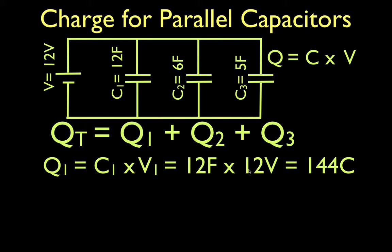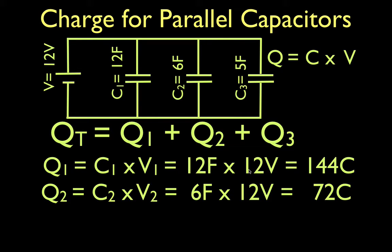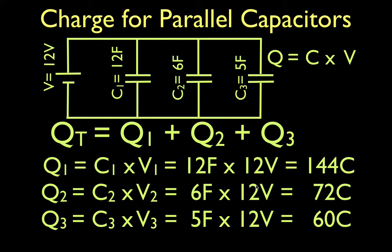Now, we can do the same thing for capacitor number two. Q2 is C2 times V2. This one has a capacitance of 6 farads. We said the voltage is equal to the voltage of the battery. 6 times 12 is 72.